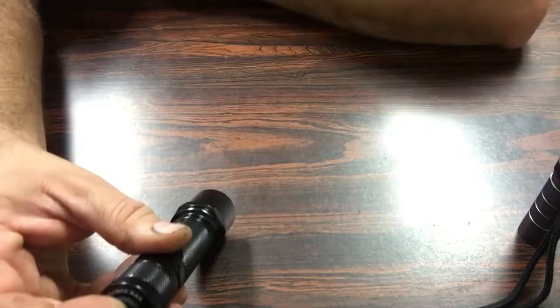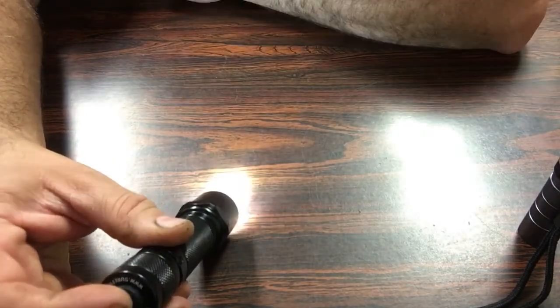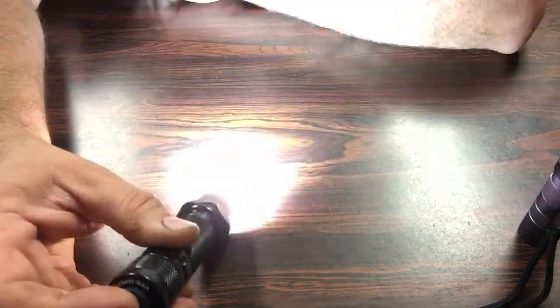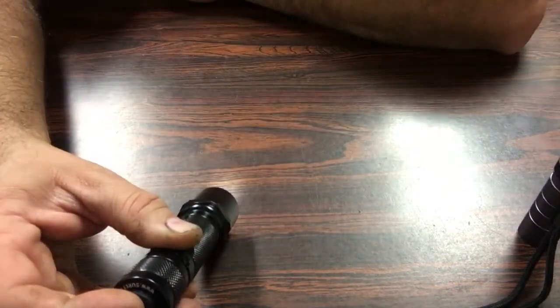You get a confirmation flash, that's moonlight right on up through the stages to strobe, whatever you programmed it for.